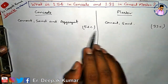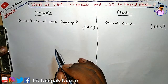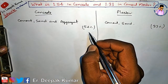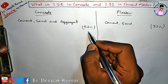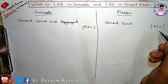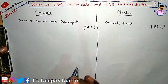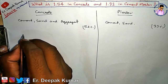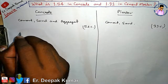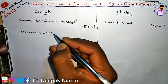In concrete, there is a 54 percent rise, and in plaster, a 33 percent rise. How do we know that? In cement, sand, and aggregate, there are many voids, so in dry volume there is a 54 percent rise. But in cement and sand mixture — mortar — there are fewer voids, so there is only a 33 percent rise.